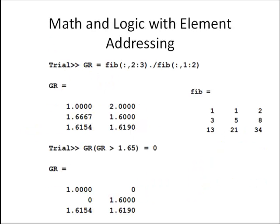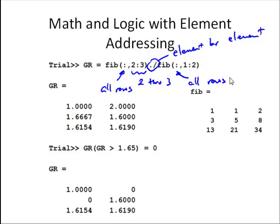We can combine that and do some math and logic with specific vector elements. Here we have a new matrix creation where we're taking all rows, second through third columns of fib and dividing them element by element by the corresponding elements in all rows and first through second columns of fib. You have to be paying special attention to your addressing here, which is a row, which is a column, and making sure the end results are the same size.